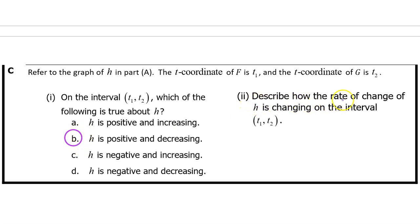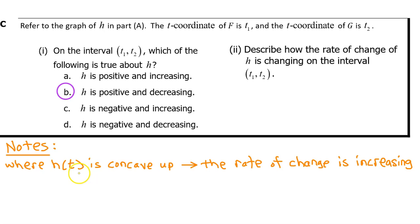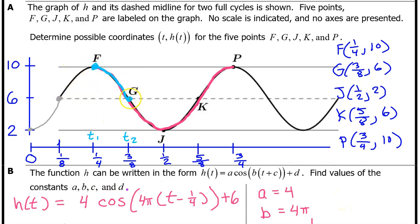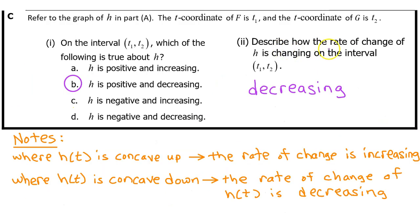Part C, part 2. Describe how the rate of change of h is changing on the interval from T1 to T2. Wherever h(t) is concave up, the rate of change of h(t) is increasing; wherever h(t) is concave down, the rate of change of h(t) is decreasing. On the interval from T1 to T2, h(t) is concave down, so the rate of change of h(t) is decreasing. It's probably safest to just answer with a single word: decreasing.